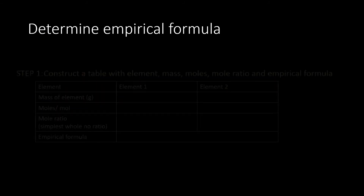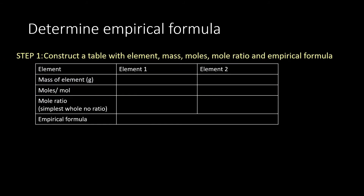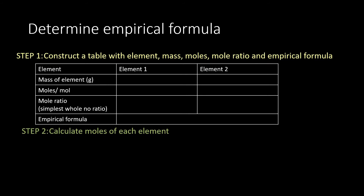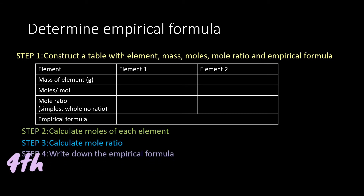Now I will guide you on how to determine empirical formula. To determine empirical formula, there are a few steps to follow. Step 1 is to construct a table with rows for elements, mass, moles, mole ratio, and empirical formula. Step 2 is to calculate the moles of each element. Step 3 is to calculate the mole ratio. Step 4 is to write down the empirical formula based on the mole ratios obtained in step 3.